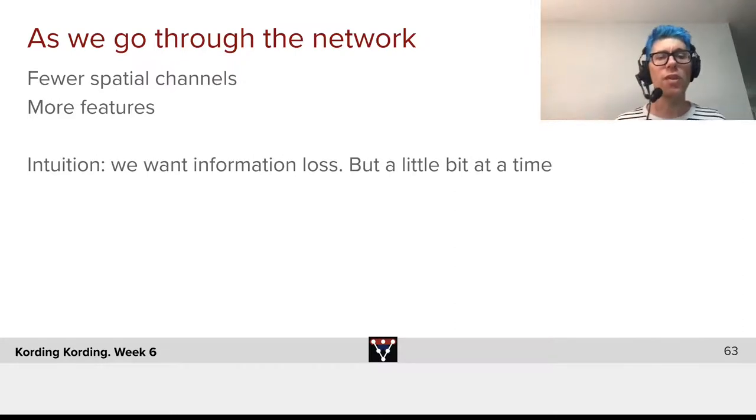And so, as we go through the network, we will have fewer spatial channels and more features. We want some information loss. Not like we want to ignore aspects about the image that are not indicative about which class it is. But we don't want to do too much of that at the same time.